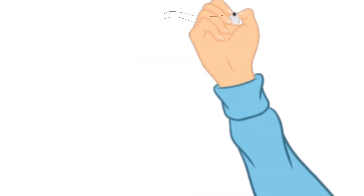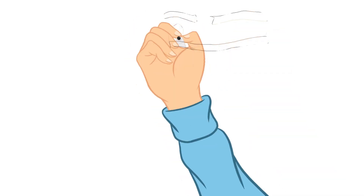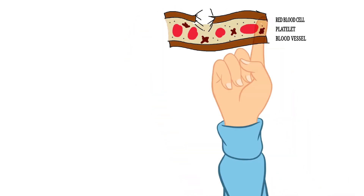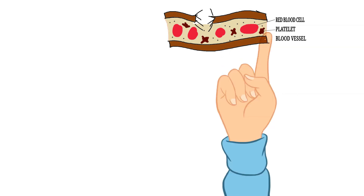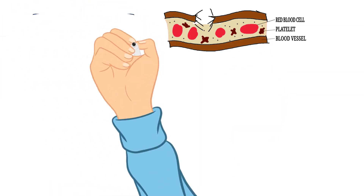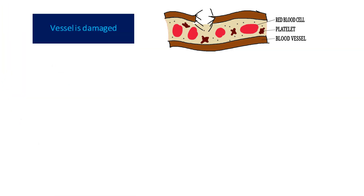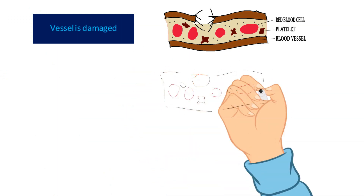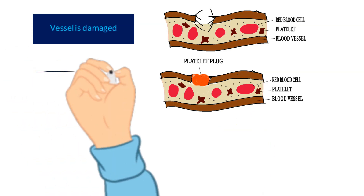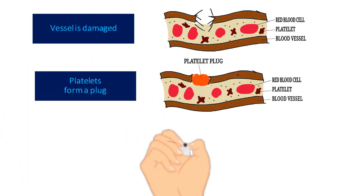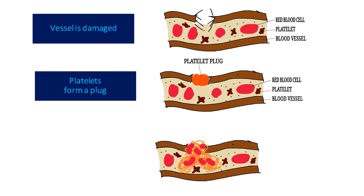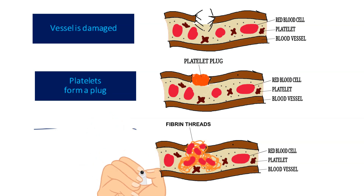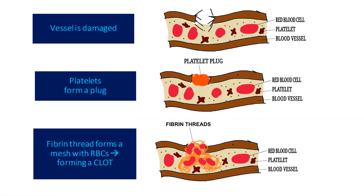Clotting of blood, or coagulation: when a blood vessel is cut, blood oozes out but soon a clot is seen to form on the wound and the flow of blood is stopped. If it were not so, the injured person would bleed to death. The diagrams show how, when a blood vessel is damaged, a plug is formed by the platelets at the site of injury. This platelet plug forms a thread-like structure made up of fibrin, which forms a mesh with the RBCs and ultimately forms a clot.